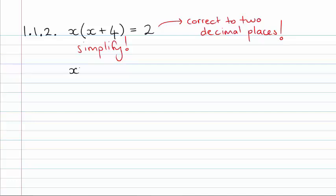x times x, we've got our x squared. x times 4, we've got plus 4x. That is equal to 2. And then what jumps out at us? The fact that this is a quadratic equation.